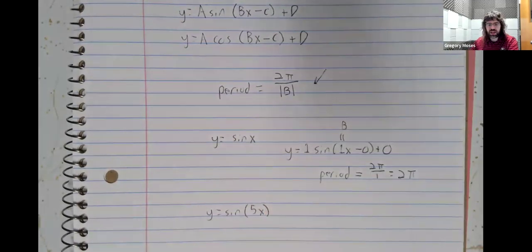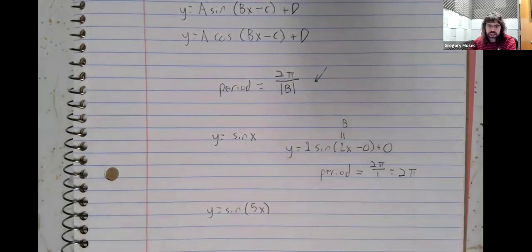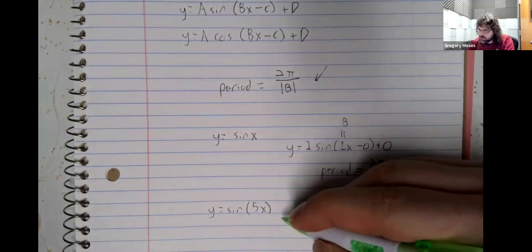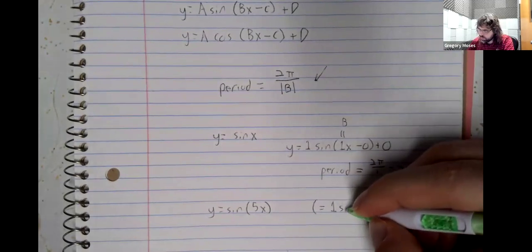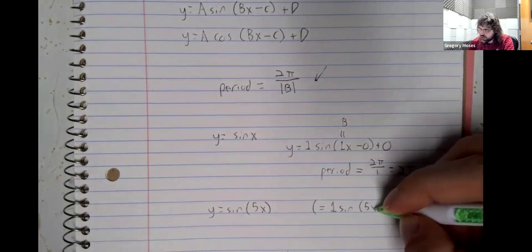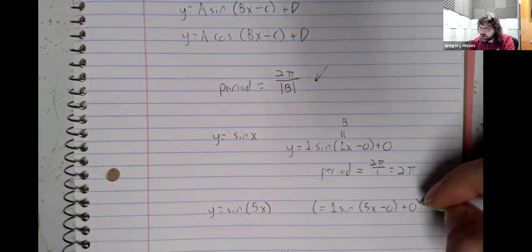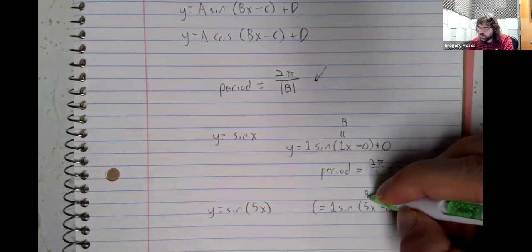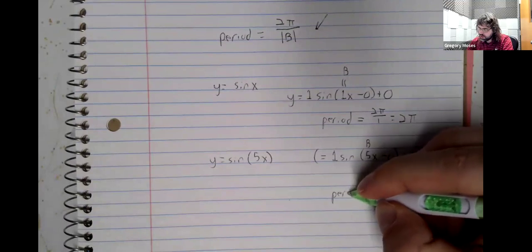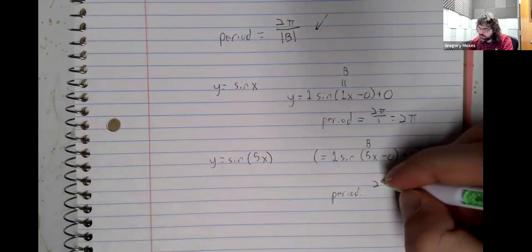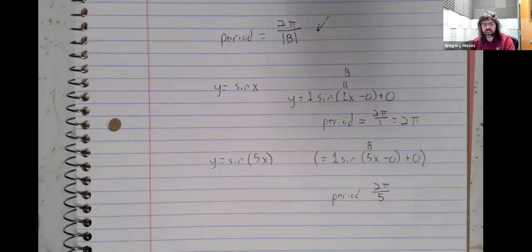Y equals the sine of 5x. Again, we're not writing in all of the zeros and ones, but this is a sinusoidal function. B is 5 here, and the period is 2π divided by 5.